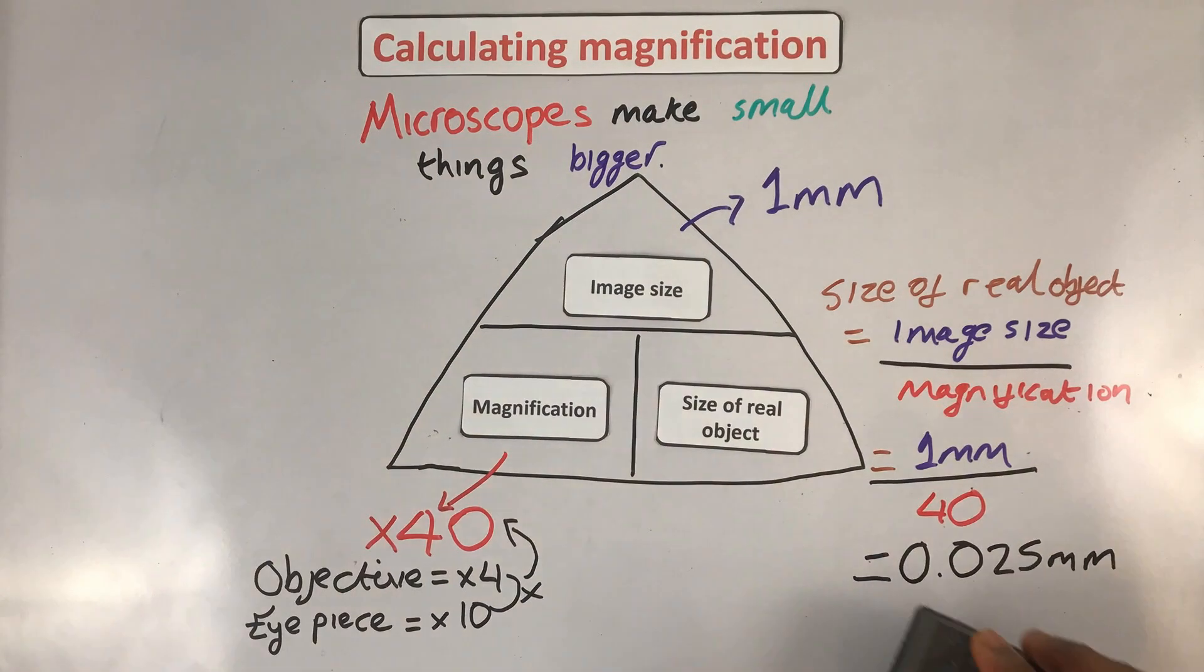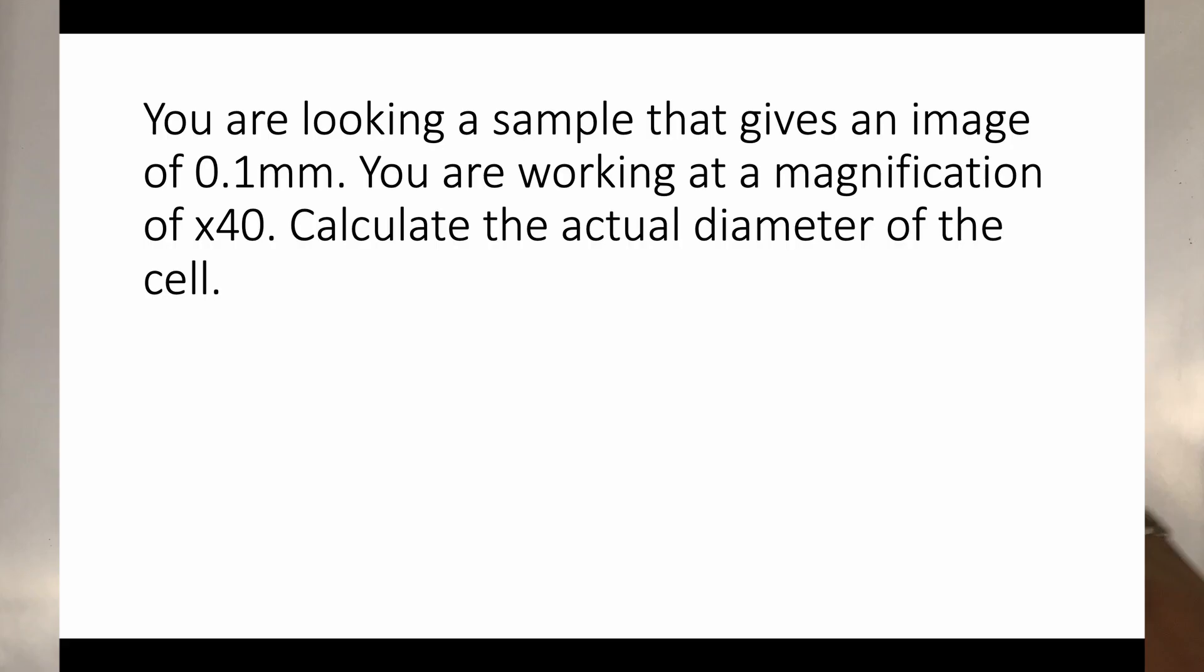Now watch this next example. You are looking at a sample that gives you an image of 0.1 millimeters. You are working at a magnification of ×40. Calculate the diameter of the cell. When you get questions like these that are in a big power graph, first thing you should do is highlight what you have been given in the question and what you have been asked to calculate. Clock that we have an image size of 0.1 millimeter.